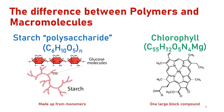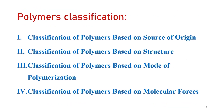From the structure, you can see that chlorophyll doesn't contain monomers. Instead, it's a chunk of one big compound. In other words, it is not made from joining monomers together. There are four approaches used in classifying polymers.